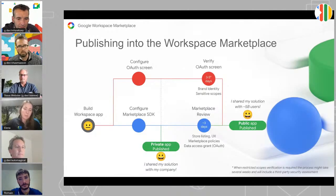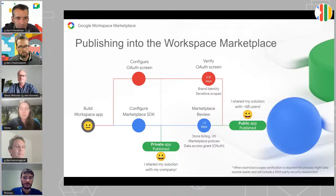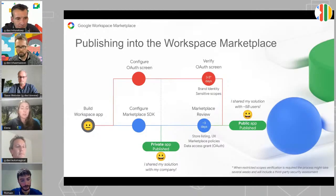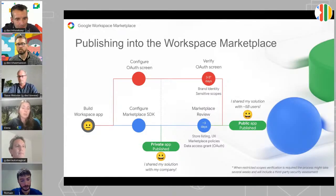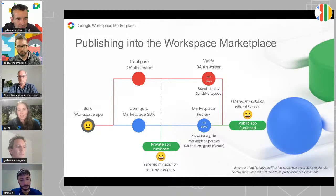The red bubbles represent the process you go through to get your data verified. The blue bubbles represent the marketplace review process, which is run by the Workspace platform marketplace team. That's more about user experience — making sure your app store listing is curated, all marketplace policies are respected, and you're in compliance. We also check that you successfully went through the OAS verification process, and sometimes that's a bottleneck.